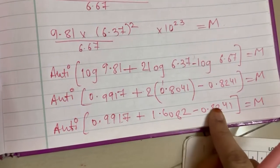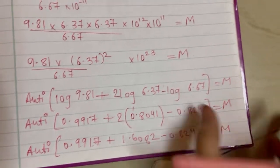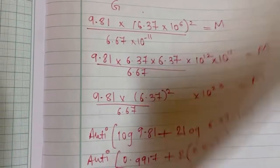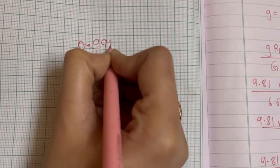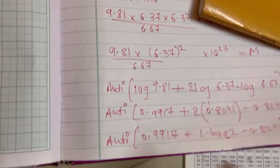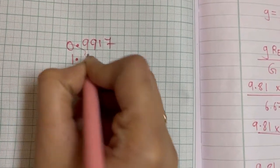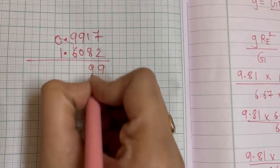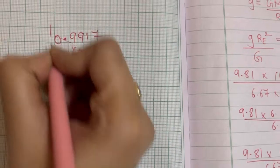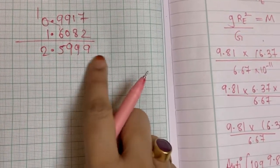0 point 8241 is equal to M. Now add this 2 and then subtract this one from that answer. Let's add, it is 0 point 9917, 0 point 9917, then 1 point 6082, 1 point 6082, 7 8 9, 8 9, 9, 15, 2 point 5 triple 9.